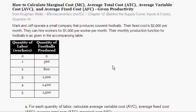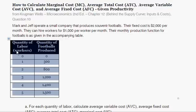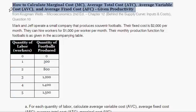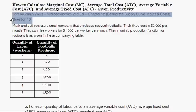With this question, we're going to be given just a little bit of information about a company's costs — productivity and costs — and we're going to calculate marginal cost, average total cost, average variable cost, and average fixed cost. This question is borrowed from Krugman Wells Microeconomics, Chapter 12: Behind the Supply Curve — Inputs and Costs, Question 10.